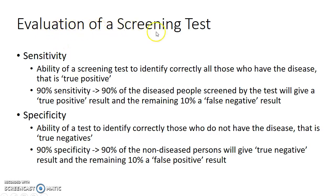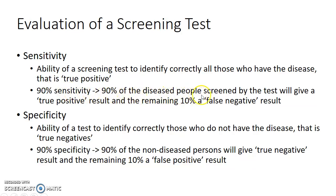Now let us see about the evaluation of a screening test. Sensitivity is the ability of a screening test to identify correctly all those who have the disease, i.e. true positives. If a screening test has 90% sensitivity, it means that 90% of the diseased people screened by the test will give a true positive result and the remaining 10% will give a false negative result.